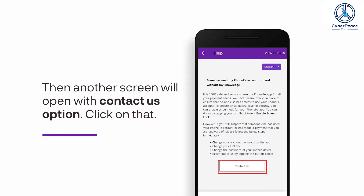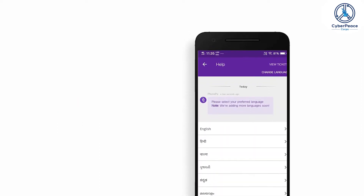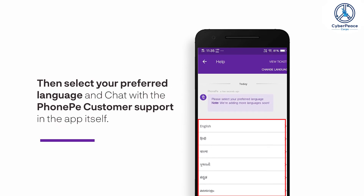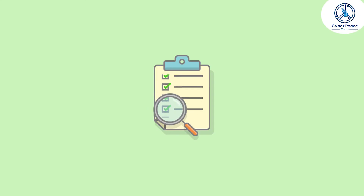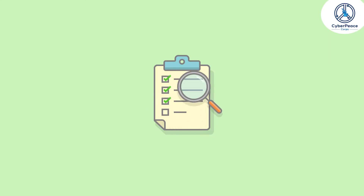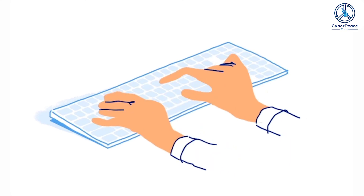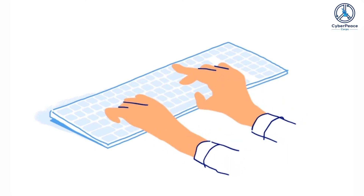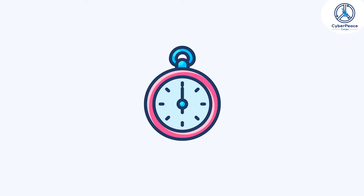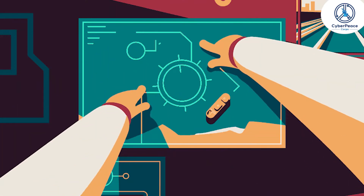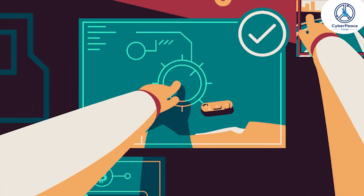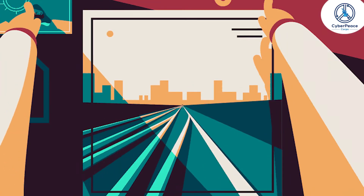Then select your preferred language and chat with the PhonePe customer support in the app itself. PhonePe will investigate the matter once you report fraud. Your PhonePe account may be blocked temporarily for security reasons.